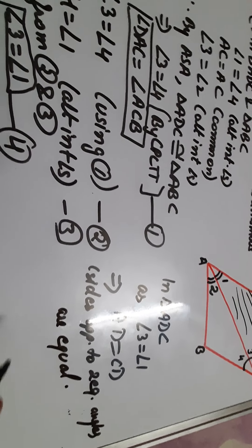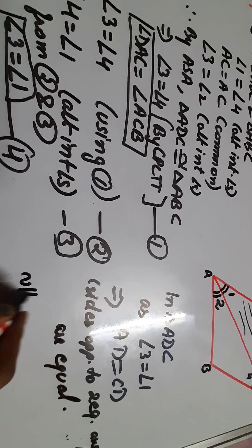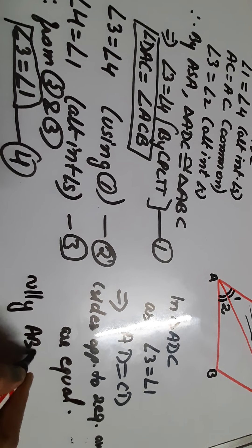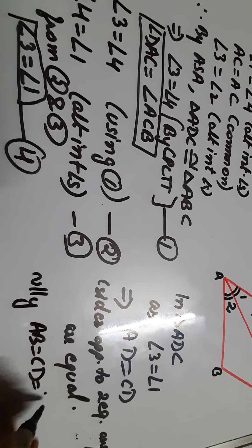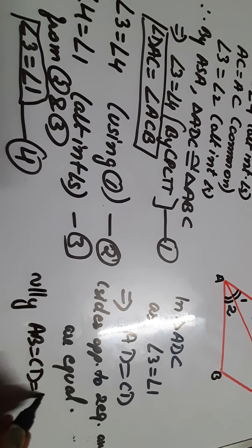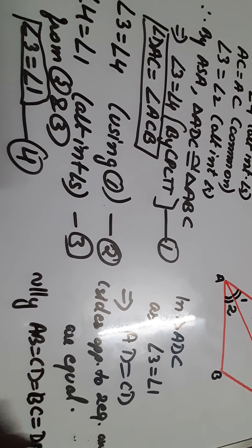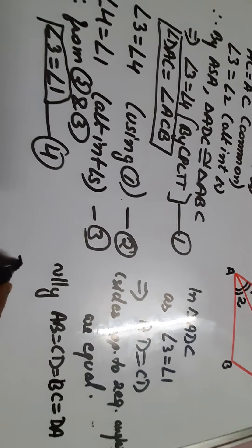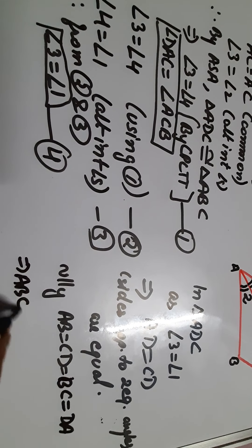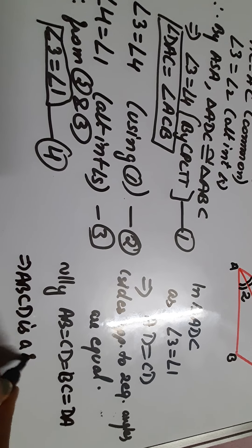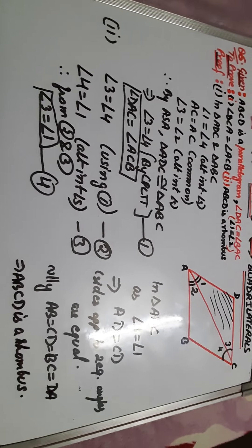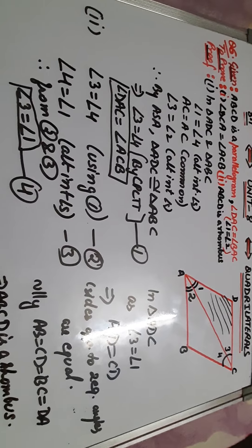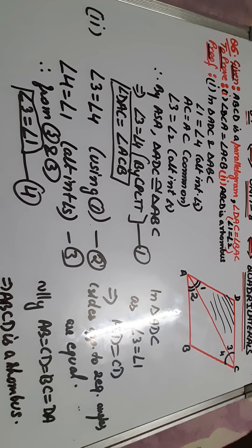Similarly AB is equal to BC is equal to CD is equal to DA. This implies ABCD is a rhombus. Hence proved. That's all for now, thank you my dear students.